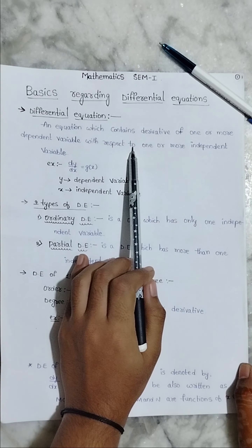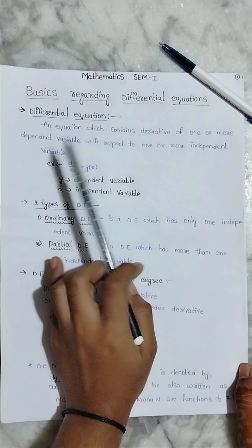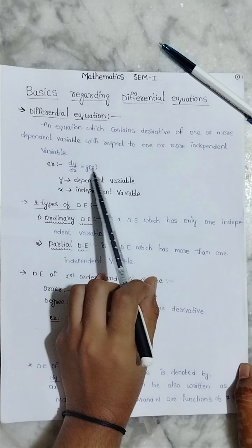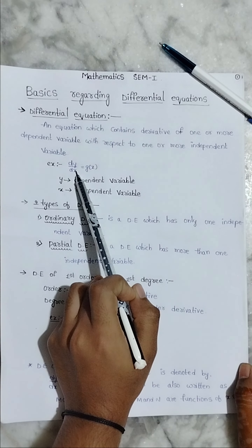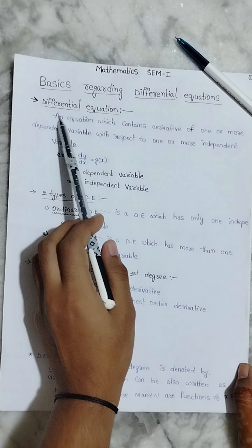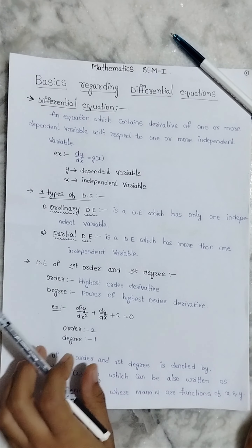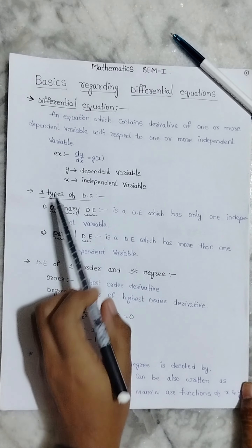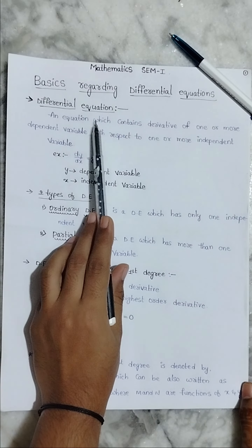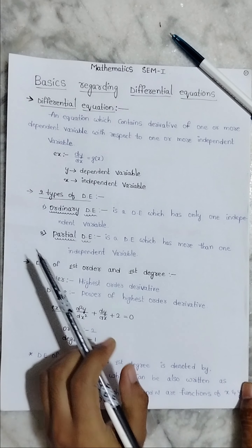With respect to one or more independent variables, this is called a differential equation. Next, differential equations are divided into two types.